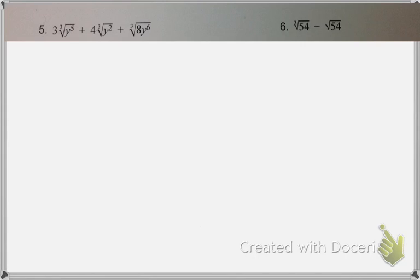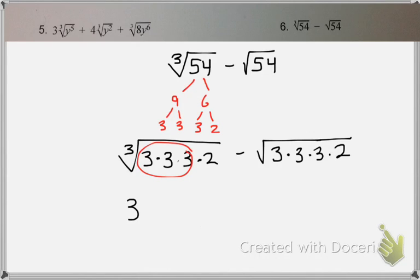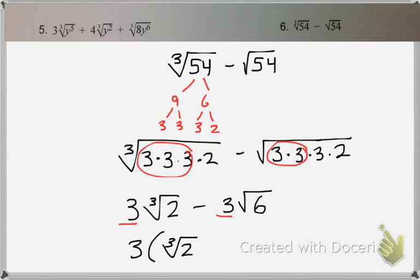And for number 6, you might notice that these two cannot be subtracted because they have a different index. But just because they can't be subtracted doesn't mean you don't need to simplify them. So you still need to simplify them completely to get the correct answer. So they factor out in the same way. But just remember, for one, I'm looking for groups of 3. And for the other, I'm looking for groups of 2. And then, so for my first one, here's my group of 3. So it becomes 3 cube root of 2. And for my second one, here's my group of 2. So it becomes 3 square root of 6. And you might notice that they both have a 3 in front. So we can actually factor that 3 out. 3 times cube root of 2 minus square root of 6.